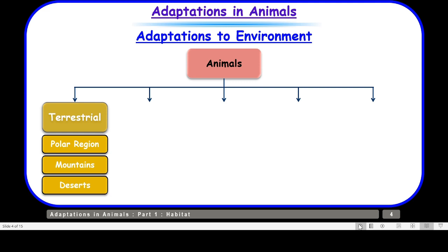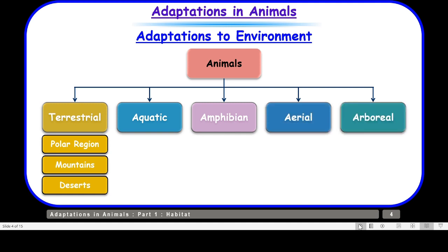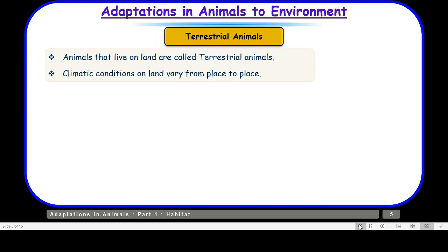Habitats can be terrestrial, and under terrestrial we have three regions: polar regions, mountain regions, and deserts. Then we have aquatic animals, amphibians, aerial animals, and arboreal animals. Let us take up our first category — terrestrial animals. Animals that live on land are called terrestrial animals.